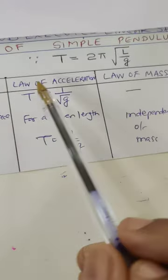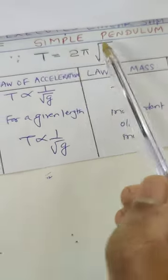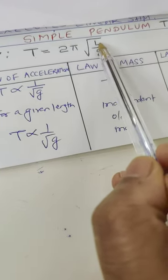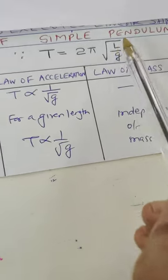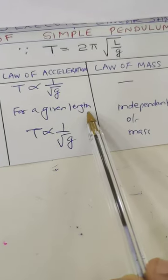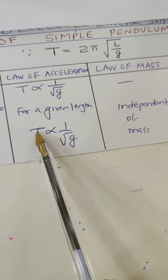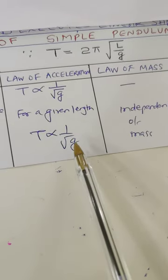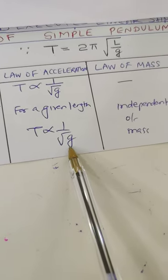Now the law of acceleration. As per this formula can you say T is inversely proportional to root of g? Provided l is constant. So at a given length, period of a simple pendulum is inversely proportional to the square root of acceleration due to gravity.